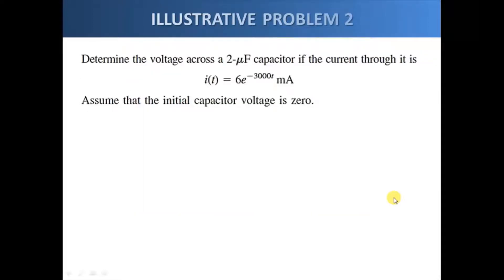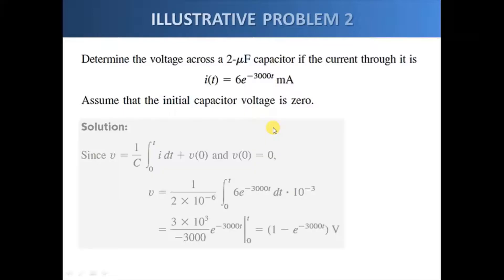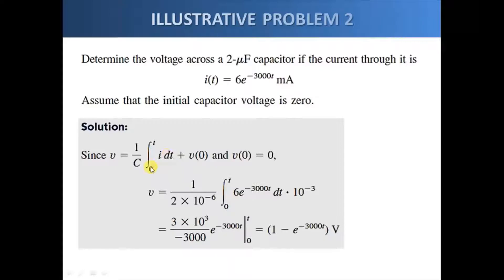In the second example, we have a two microfarad capacitor and current is flowing towards this capacitor. We assume that the capacitor has no initial voltage. We can use the formula for voltage, which involves first getting the accumulated voltage by integrating from zero to t of the current function, then adding whatever initial voltage we have.